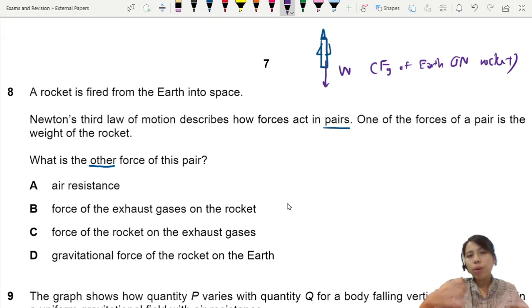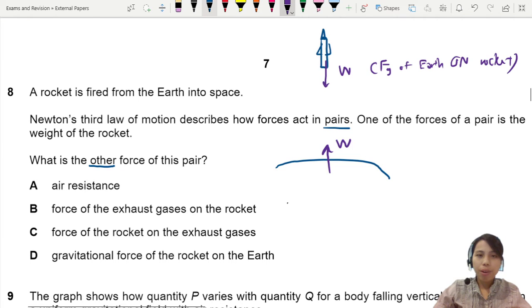The other force that is the pair to this has to be the same type - also gravitational force, but in the opposite direction. The only other choice you can have here is the planet. The planet pulls the rocket, so the rocket also pulls the planet with the same force.